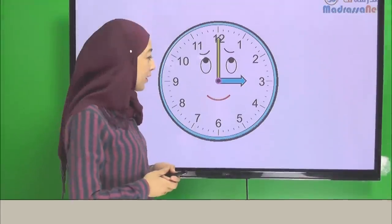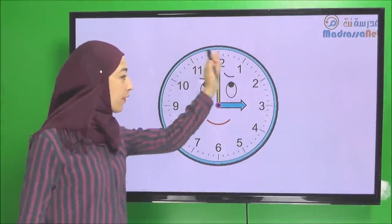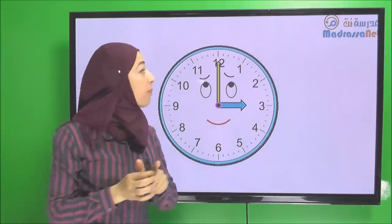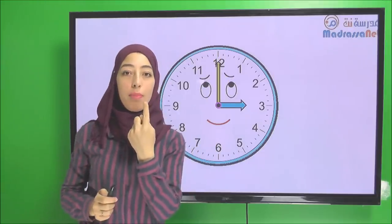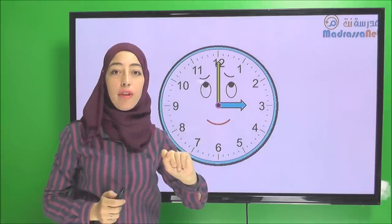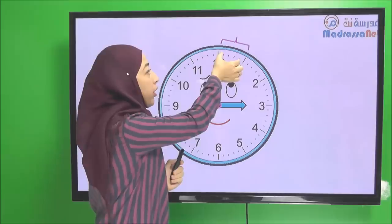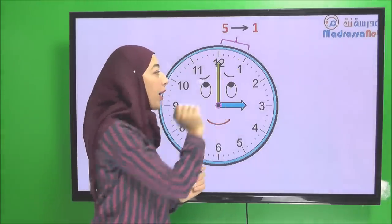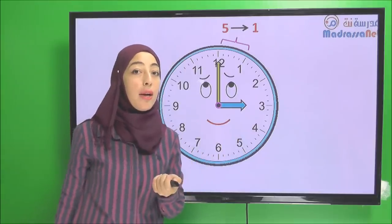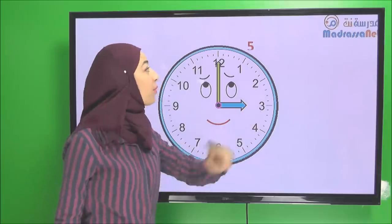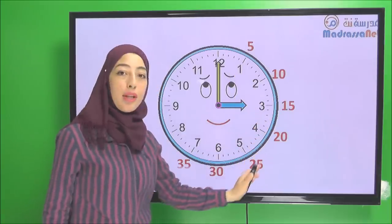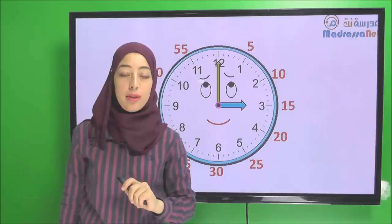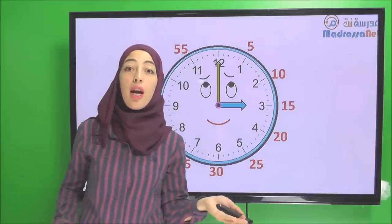And we have the numbers. Here on this clock we have graduations. Each graduation represents one minute. Here we have five — they are represented with one. We have five minutes represented with one. So ten minutes are represented with two. So here we have five, ten, fifteen, twenty, twenty-five, thirty and so on until we reach fifty-five minutes. We know that one hour has sixty minutes.